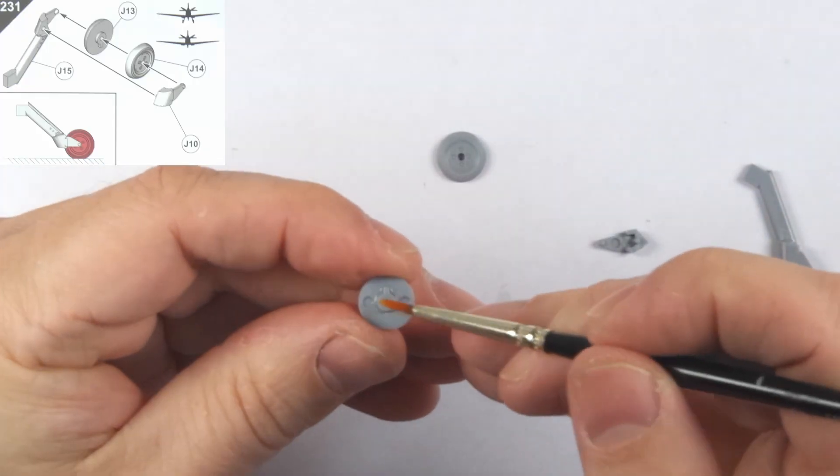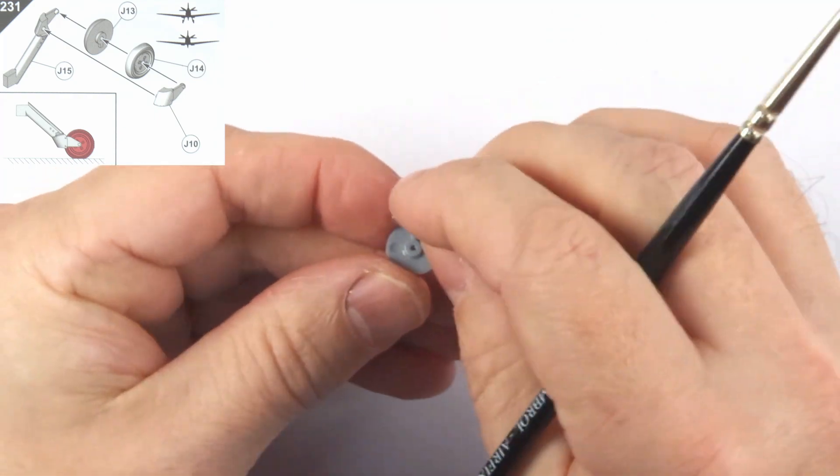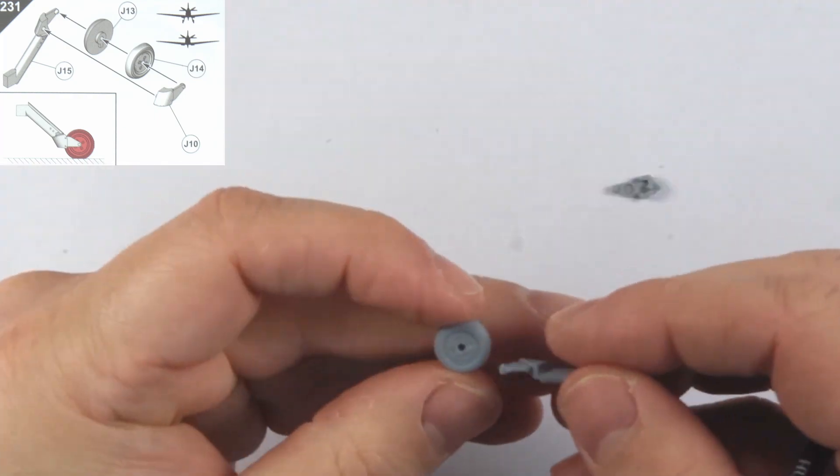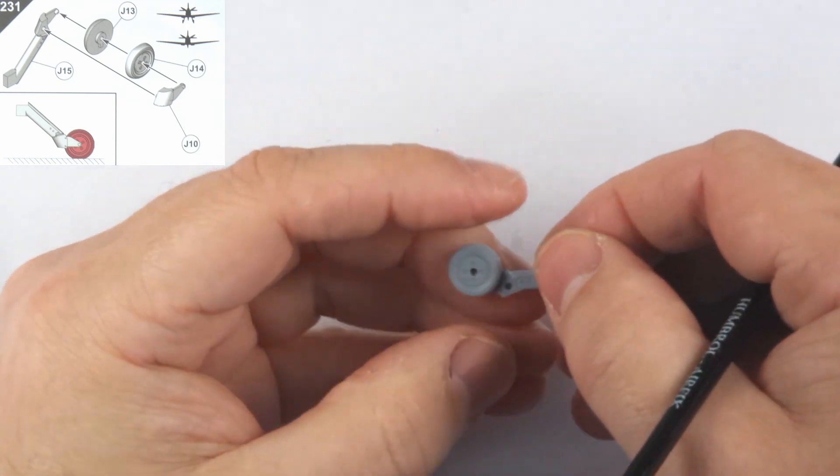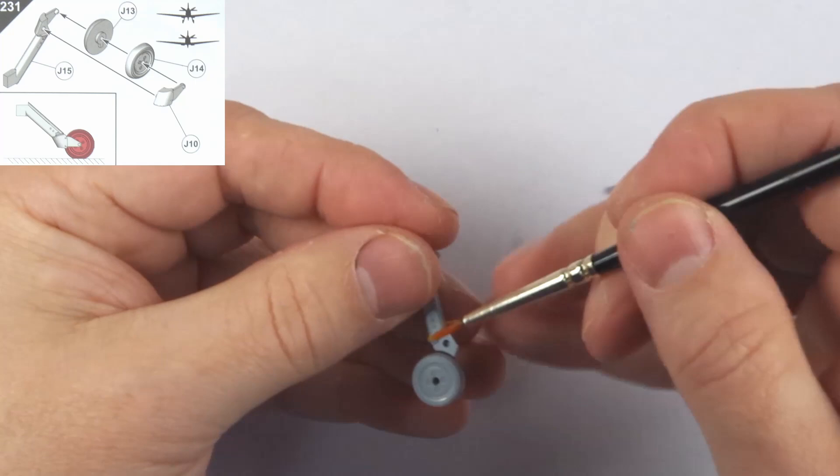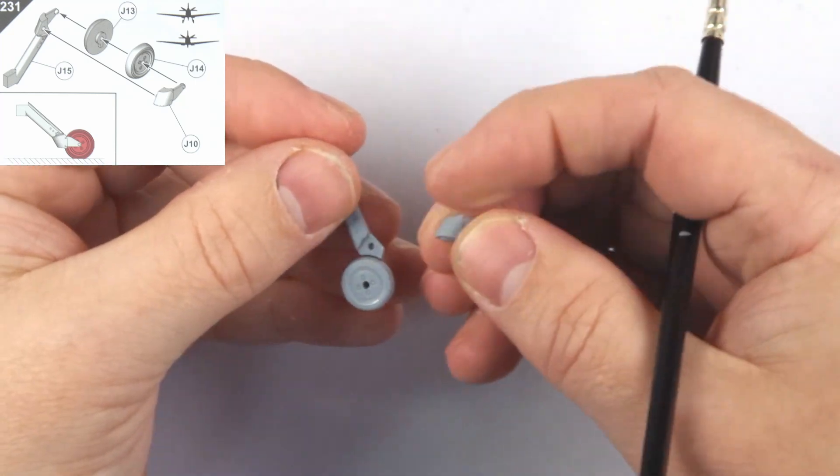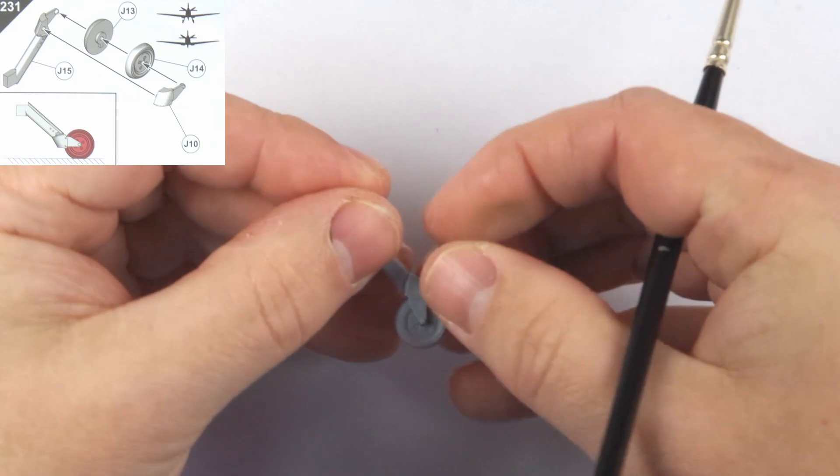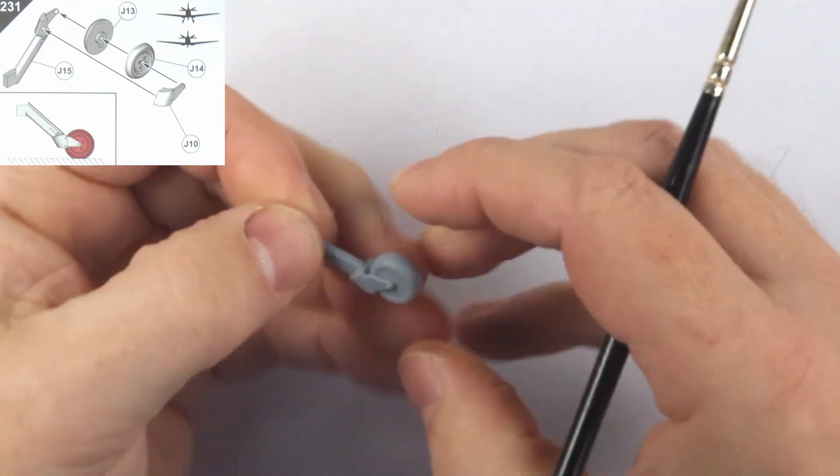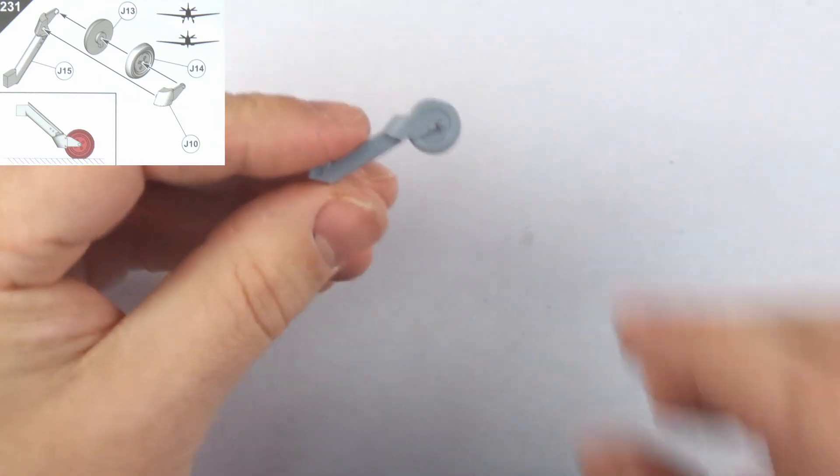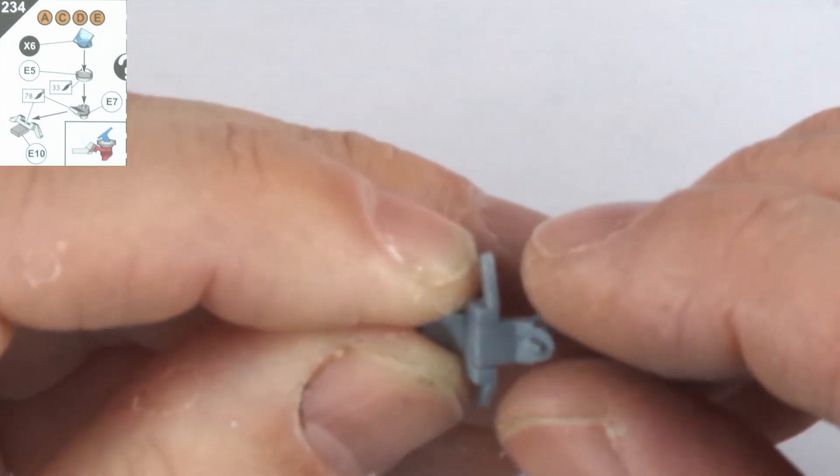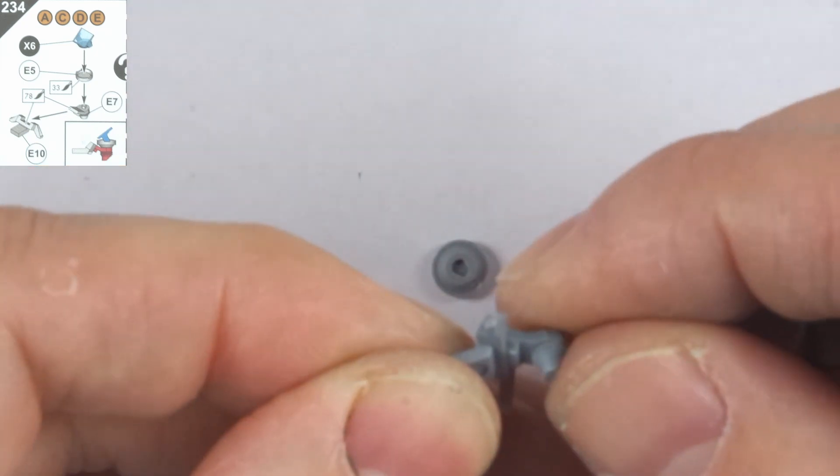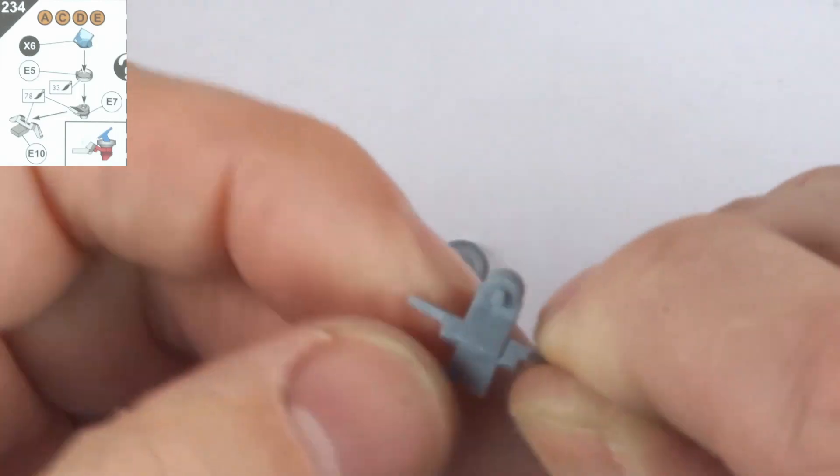Step 231 covers the building of the four-piece tail wheel assembly. This presents no particular problems, but does need some seam filling at the bottom of the strut. Going to step 234, we make the deflection gun sight for the cockpit. Again, this has some fiddly pieces, but nothing terrible. I left off the transparency until after painting.